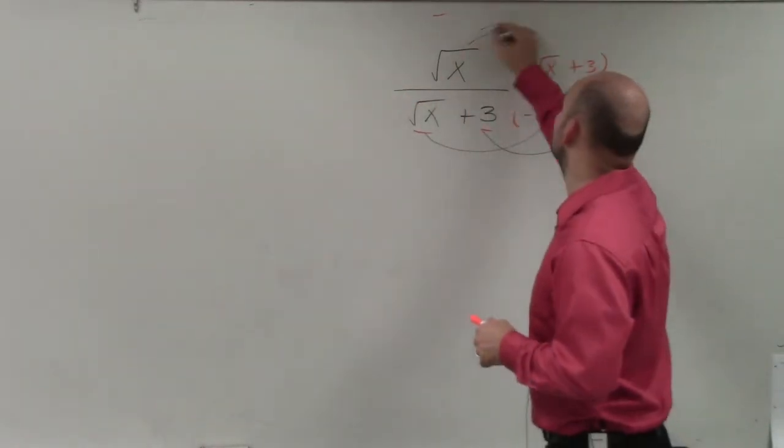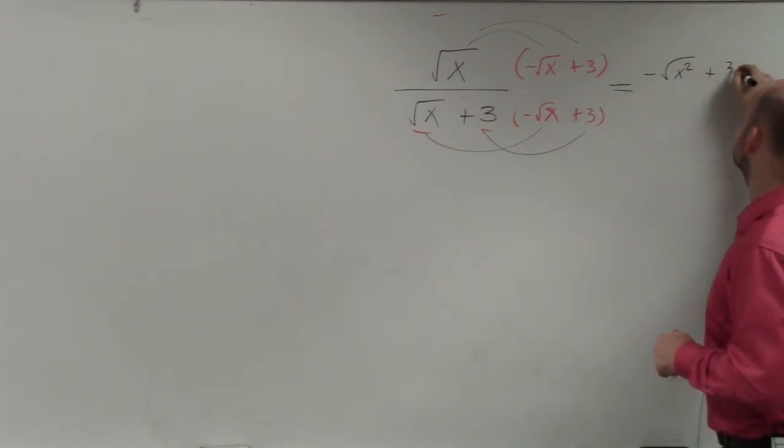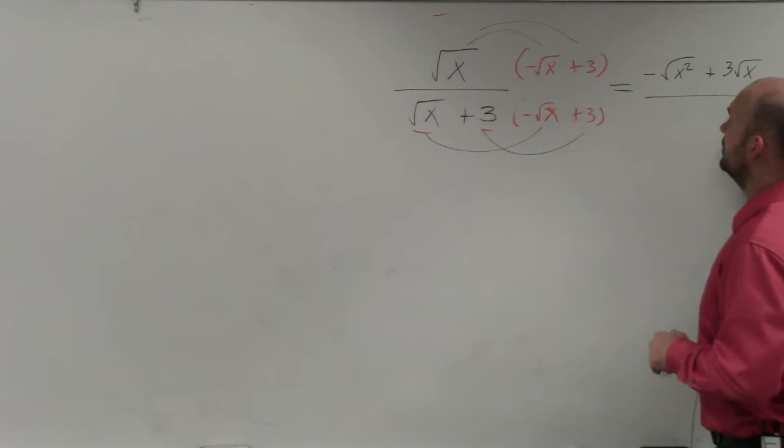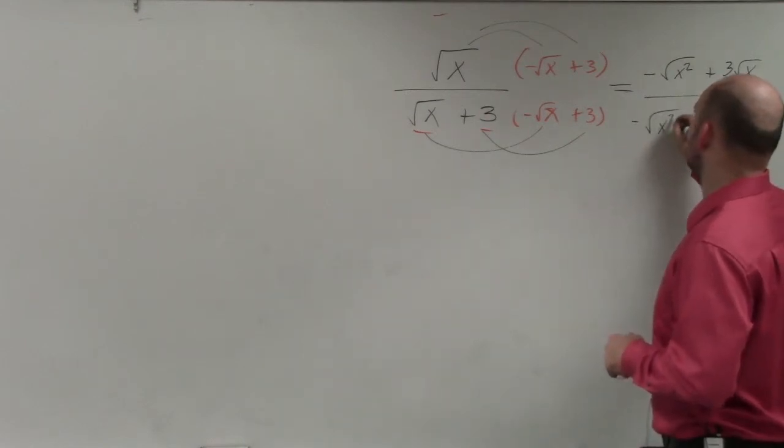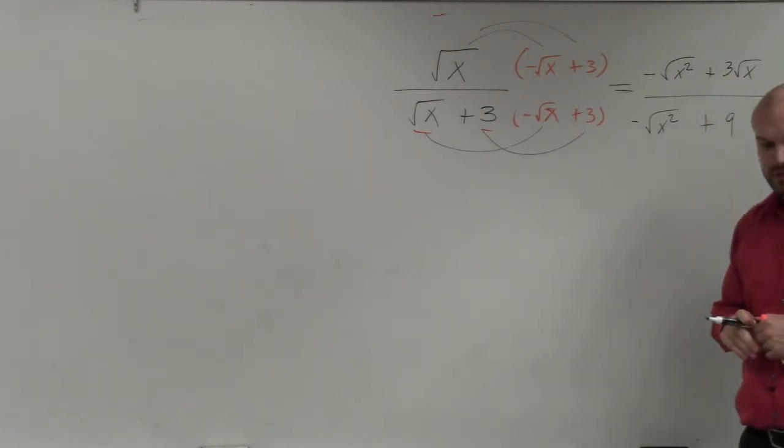Up top, you apply the distributive property. And you get negative square root of x squared plus 3 square root of x all over negative square root of x squared plus 9.